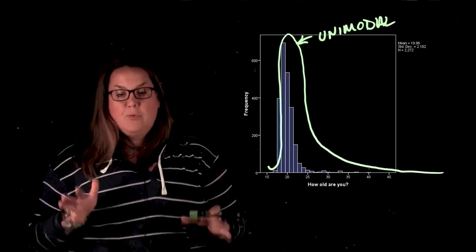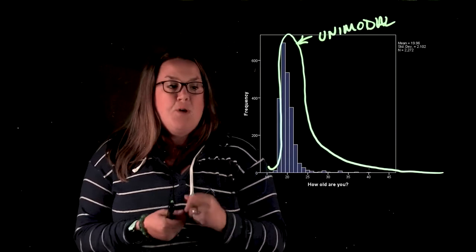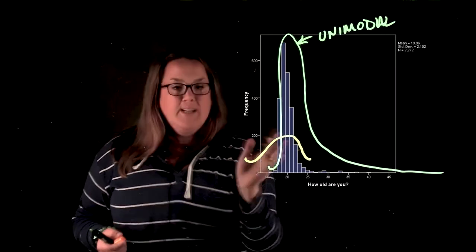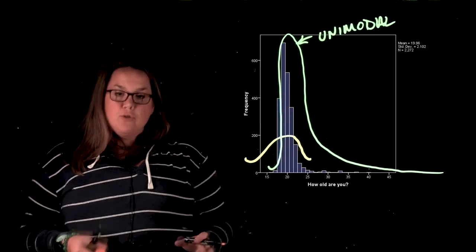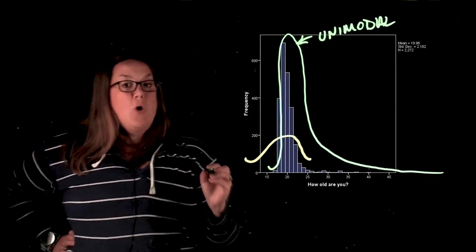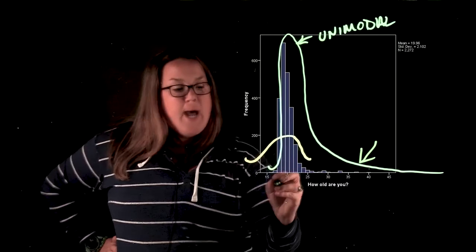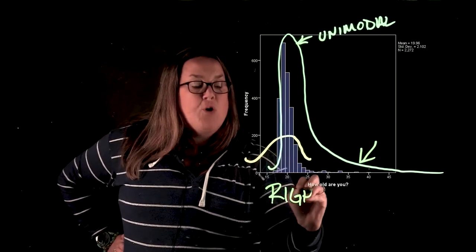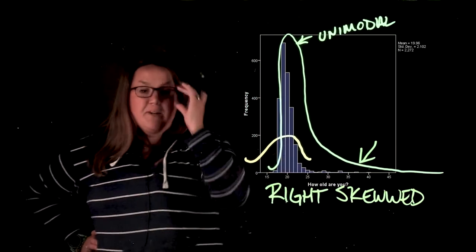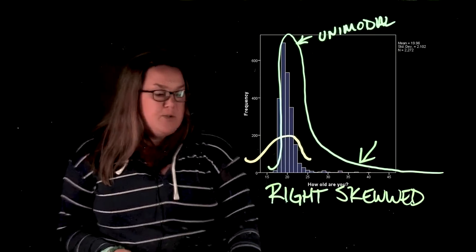However, it is not symmetric, so we cannot describe it as being bell-shaped. Sometimes students want to talk about one side of the curve and they'll say it's bell-shaped and another thing. You can't do that. When you have a distribution, you describe it one way with one shape. So here, this is not bell-shaped because it's not symmetric. I know that it's skewed, and specifically it's skewed on this side. That's where the tail or the drag is happening, and so we would call this right-skewed because it's skewed on the right-hand side. Sometimes people call this positively skewed because it's on the high end of the distribution, but I think that right-skewed is more intuitive.